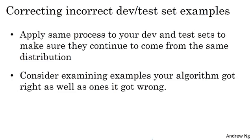Second, I would urge you to consider examining examples your algorithm got right as well as ones it got wrong. It is easy to look at the examples your algorithm got wrong and just see if any of those need to be fixed. But it's possible that there are some examples that your algorithm got right that should also be fixed. And if you only fix ones that your algorithm got wrong, you end up with a more biased estimate of the error of your algorithm.